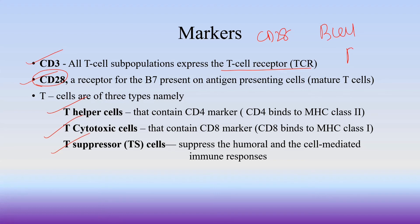The T helper cell has the CD28 receptor, which binds the B7 molecule to activate the B cell. The T helper cell marker is CD4, which is specific to MHC class II molecules. The T cytotoxic cell marker is CD8, which is specific to MHC class I molecules.